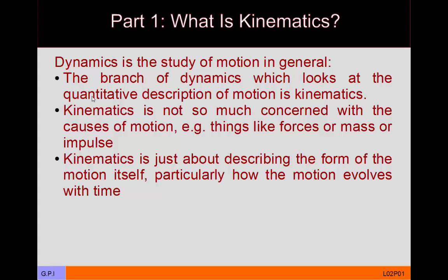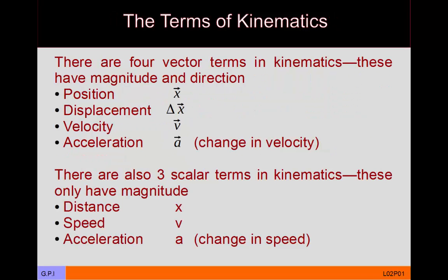The key terms of kinematics are presented here. Basically there are four vector terms you really need to describe a motion, and three scalar terms particular to kinematics, plus a fourth if you include the parameter time. The vector terms include position, displacement, velocity, and acceleration.